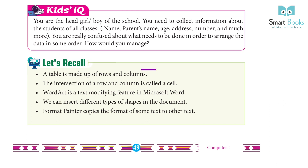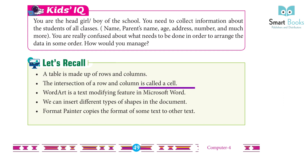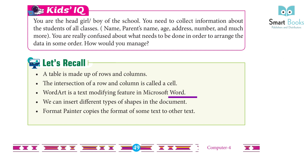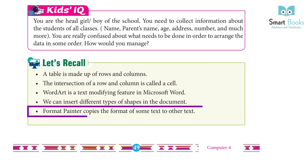Let's Recall: A table is made up of rows and columns. The intersection of a row and column is called a cell. Word Art is a text-modifying feature in Microsoft Word. We can insert different types of shapes in the document. Format Painter copies the format of some text to other text.